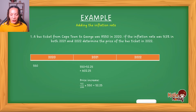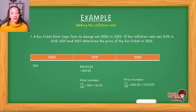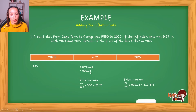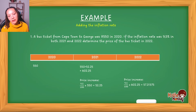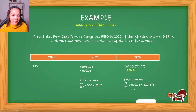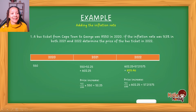This is where the compound reasoning comes in. For 2022, we take the 602.25 and calculate 9.5% of that value. 9.5% of 602.25 equals 57.21375 — note I'm not rounding off because this is not my final answer. So the 2022 price is 602.25 plus 57.21375, giving us 659 rand and 46 cents. That is the price of the bus ticket in 2022.